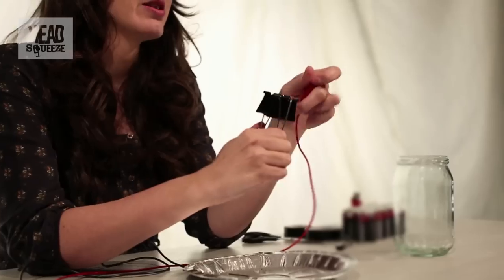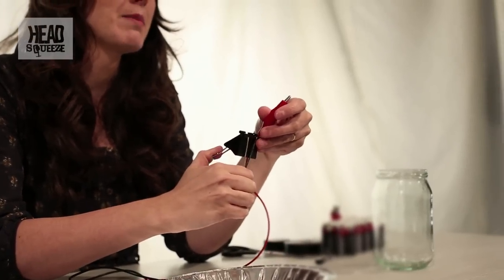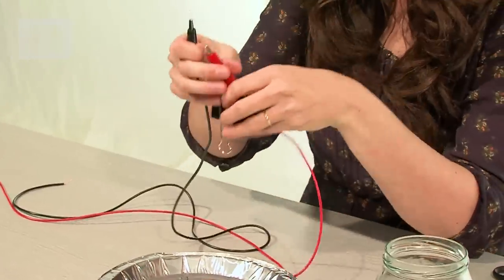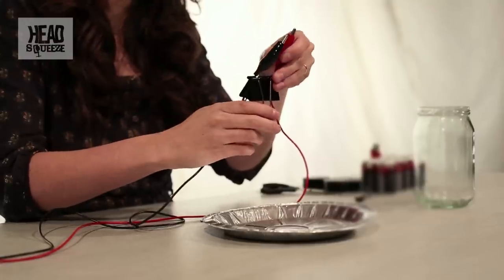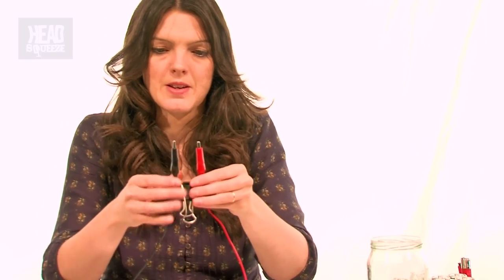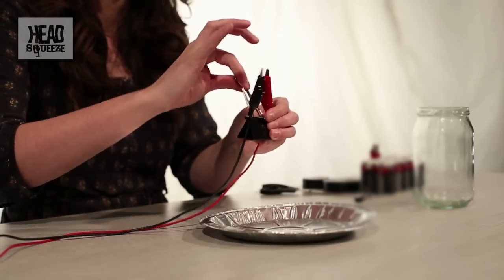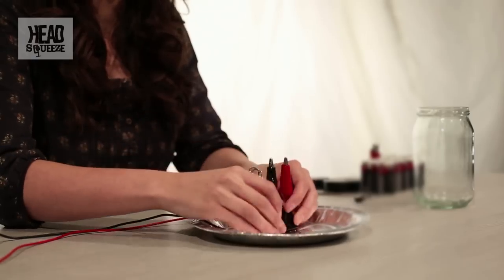Now this crocodile clip we're basically just using as a wire stand. So you just want to clip the wires in, just one on either side. And try and make sure that the wires will stand up. Then just pop the handles of the bulldog clip over to one side.